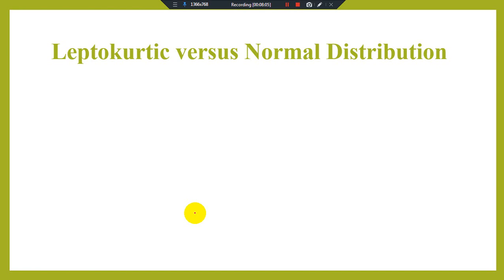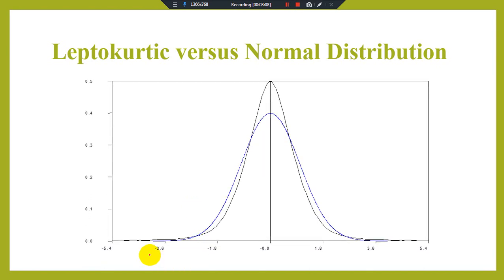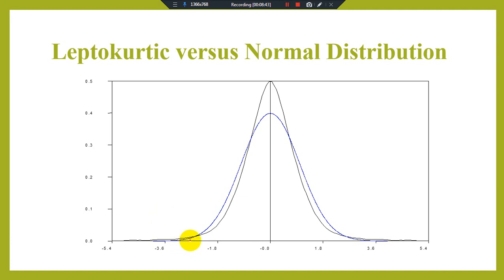Leptokurtic versus normal distribution: when we talk about leptokurtic, we have a sharp rise and sharp decline in the curve. The black line shows the leptokurtic graphical presentation — there is a sharp rise and sharp decline. When we have a normal rise, this is the normal distribution curve. Sometimes we have a very flat type of graphical presentation — that is the platykurtic versus normal distribution.